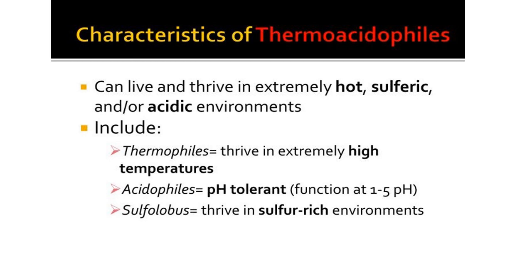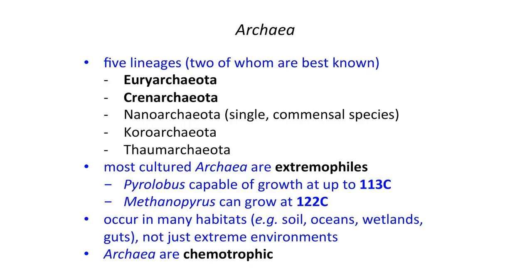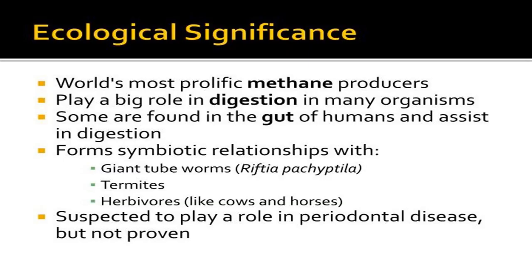Cell wall-less archaeobacteria are pleomorphic cells lacking a cell wall. They are thermoacidophilic and chemo-organotrophic facultative anaerobes. The plasma membrane contains a mannose-rich glycoprotein and a lipoglycan. Extremely thermophilic sulfur metabolizers are gram-negative rods, filaments, or cocci that are obligate thermophiles with an optimum growth temperature between 70 to 110 degrees centigrade. They are usually strictly anaerobic but may be aerobic or facultative, and can be acidophilic or neutrophilic, autotrophic or heterotrophic. Most are sulfur metabolizers: sulfur is reduced to hydrogen sulfide anaerobically, or hydrogen sulfide and sulfur are oxidized to sulfuric acid aerobically.